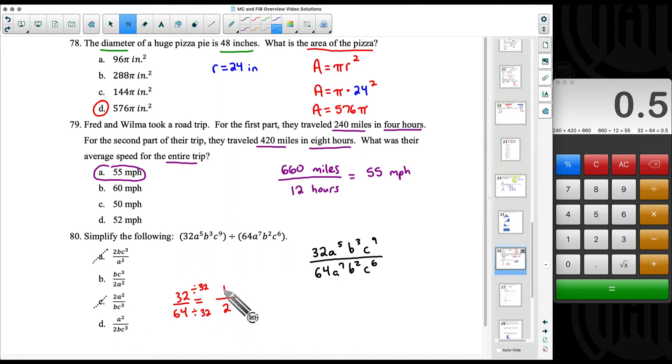And you may wonder, well what about this 1? I mean I can stick an understood 1 here in front of that bc cubed. I can stick an understood 1 there in front of the a squared. We don't need it there, that's why you don't see it. But there is an understood 1.